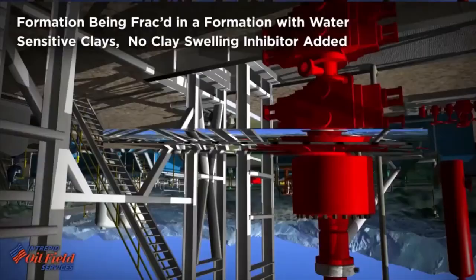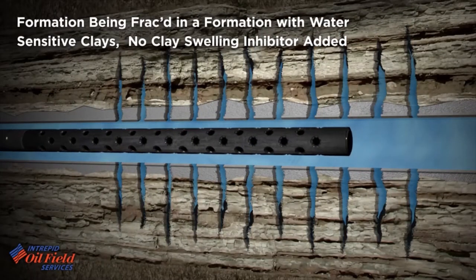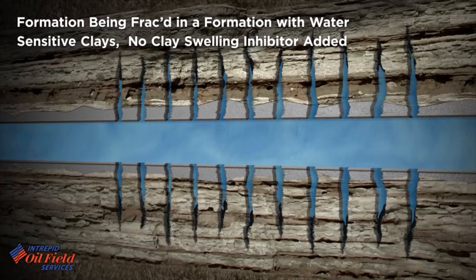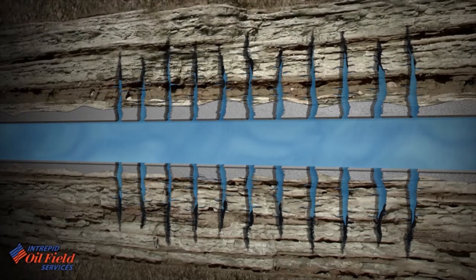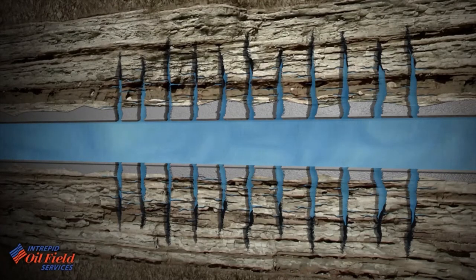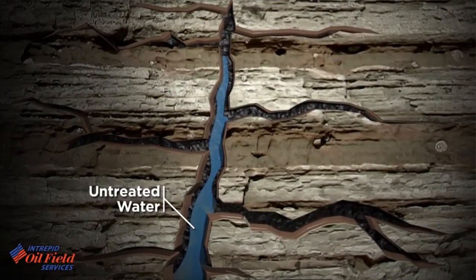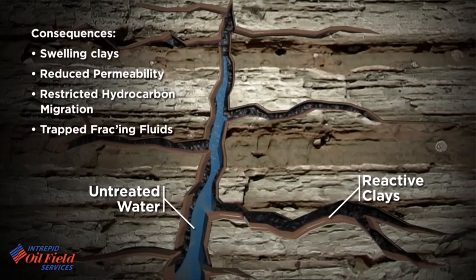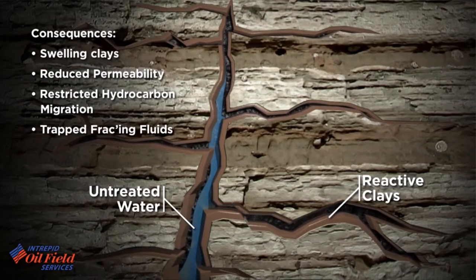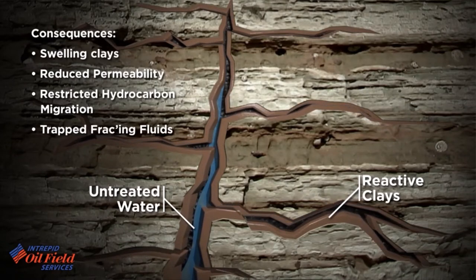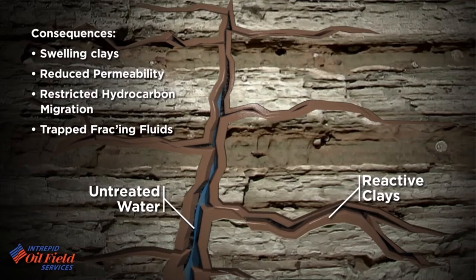Here's another example showing a formation being fracked with water-sensitive clays without using a clay swelling inhibitor, and how it drastically impacts production over the life of the well. This ultimately costs the operator millions of dollars from lost production. As rock is exposed to the untreated water, the swelling clays cause reduced permeability, restricting the migration of hydrocarbons to the surface, and cause fracked fluids to be trapped during flowback, subjecting formations to longer exposure and swelling, which is time-dependent.